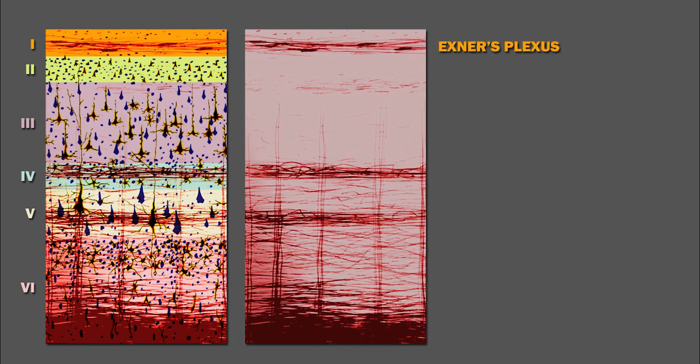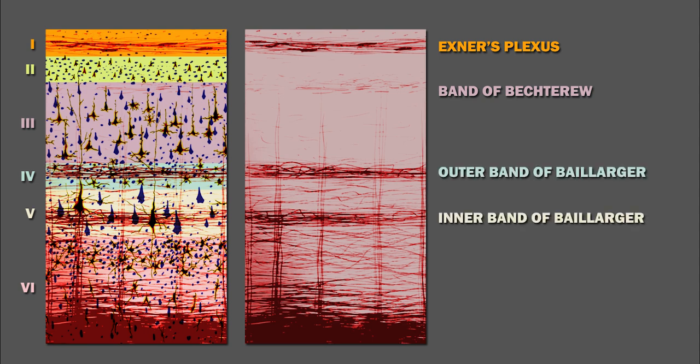Now that we've discussed the connections formed by each layer, it is easier to understand what we observe with the Weigert stain. Exner's plexus is the name for the fibers in the molecular layer. The band of Baillarger is the name for the myelinated fibers in the superficial portion of layer 3. The outer and inner bands of Baillarger are myelinated fibers coursing through layers 4 and 5 respectively. Finally, there are the deep tangential fibers and the vertical fibers.